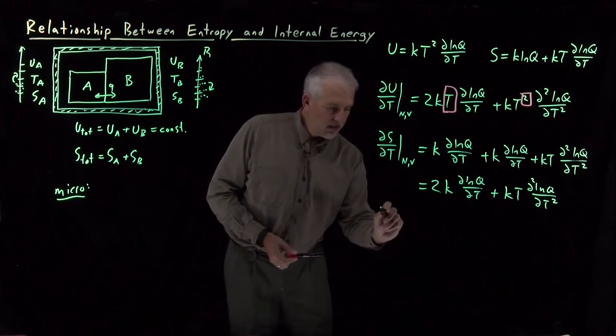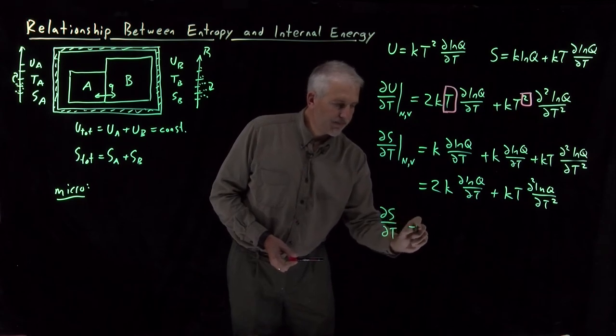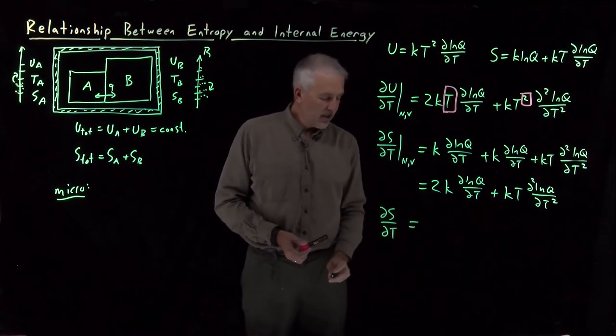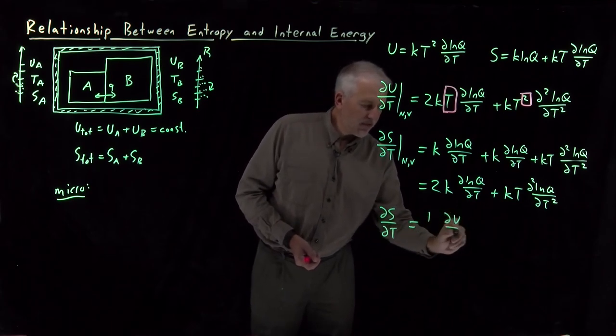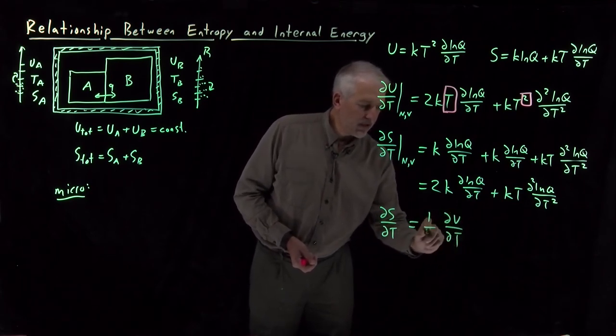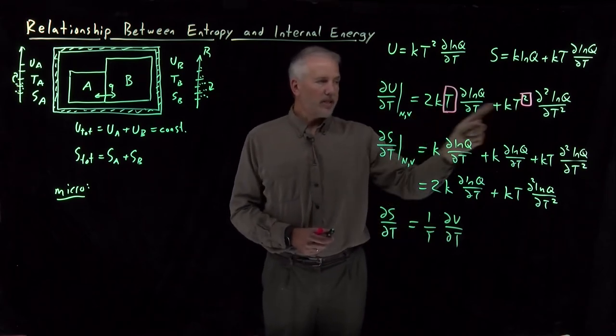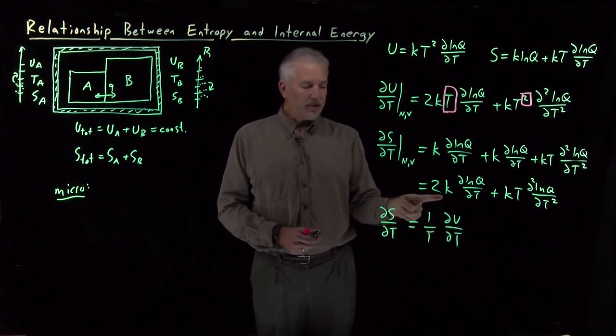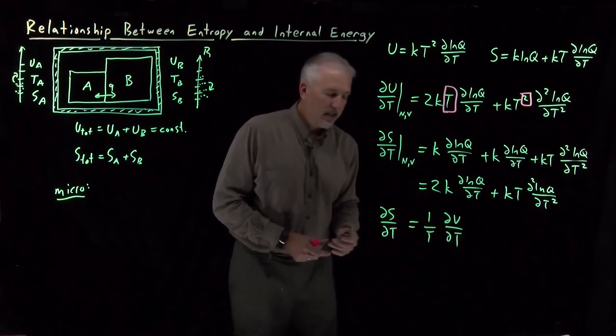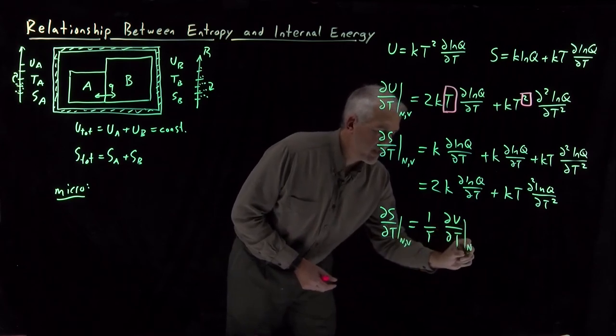dS dT, the expression I've got right here, that's equal to dU dT, the first expression we derived, if I just divide out a temperature. If I take this expression, divide by temperature to get rid of the two T's I want to ignore, then I've got the same expression as I have here for dS dT. And, again, these are both partial derivatives at constant n and v.